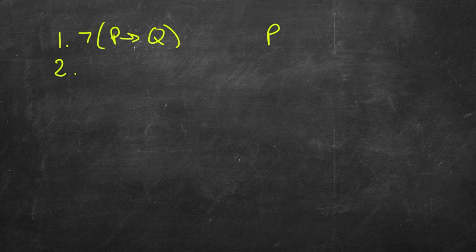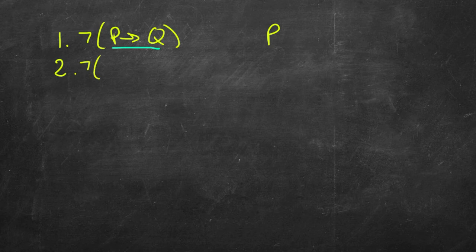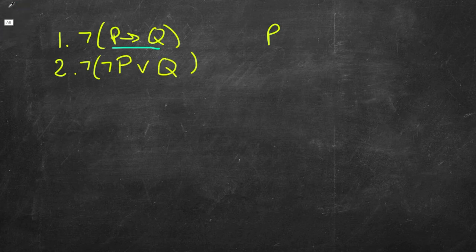Let's look at a more complicated example involving a negated conditional. Recall that with implication we can take a conditional and replace it with the equivalent formula. With respect to line one, what we do is take the conditional found in the parentheses and replace it with a disjunction that says the same thing. The key aspect to keep in mind is that we negate the antecedent of the conditional, so in our disjunction we have not P rather than simply P.